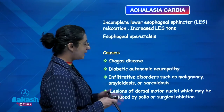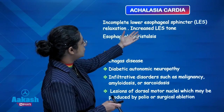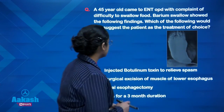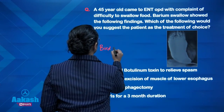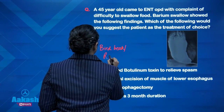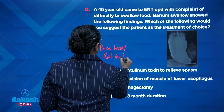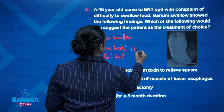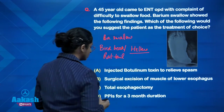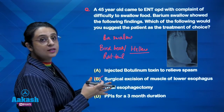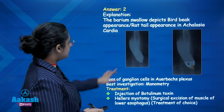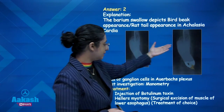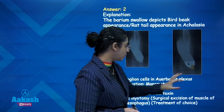This neuropathy will finally lead to decreased relaxation and increased tone. The typical barium swallow will show the bird beak appearance, also called rat tail appearance, seen in achalasia cardia. Treatment of choice is Heller's myotomy, where there is surgical incision of the lower esophageal sphincter in order to cause relaxation. This bird beak appearance is due to incomplete relaxation and loss of ganglion cells in Auerbach's plexus.